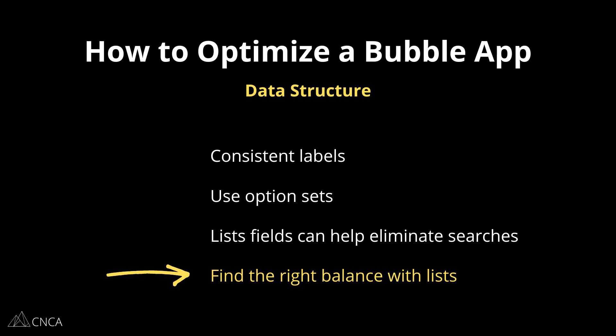Every app situation is different, so you'll need to find the right balance between relying on searches with constraints versus leveraging a list field to avoid the search. Your database structure is likely going to evolve over time — that's very normal. As you introduce changes, improvements, and new functionality to your application, you may need to go back into the data types, fields, and option sets and introduce new relationships or change the way things are organized so that you can have easier pathways to information. This can also benefit other areas of your app, making it easier to create privacy rules and reducing searches throughout your designs. Many different things can really stem from your database architecture, so don't forget about it when looking at how to optimize your app.